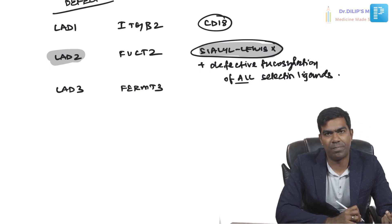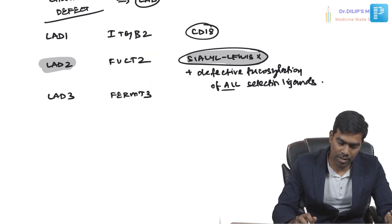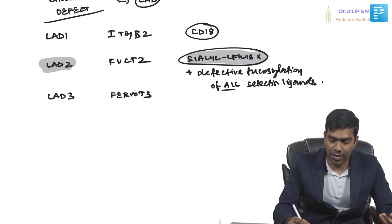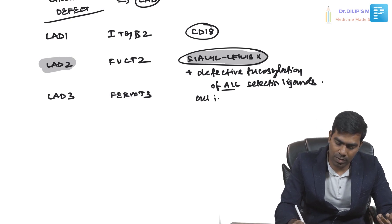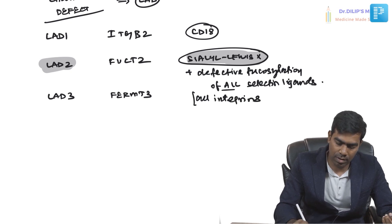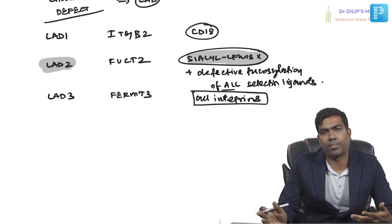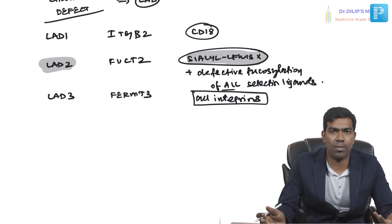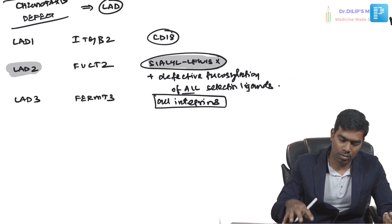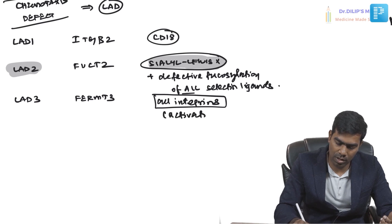LAD type 3 is due to a defective gene called FERMT3. The primary defect here is that all integrins will be defective — not only beta 2 or beta 1, but all integrins. Integrins are ligands for VCAM1 and ICAM1 cell adhesion molecules, and all of them will have an activation defect.